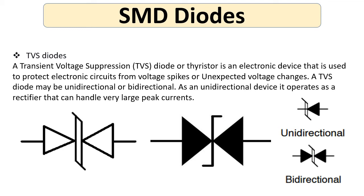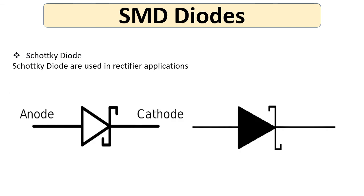For the TVS diode, or transient voltage suppressor, it is an electronic device used to protect electronic circuits from voltage spikes or unexpected voltage changes. A TVS diode may be unidirectional or bidirectional. As a unidirectional device, it operates as a rectifier that can handle very large peak currents. Here we can see the unidirectional TVS diode and the bidirectional TVS diode.